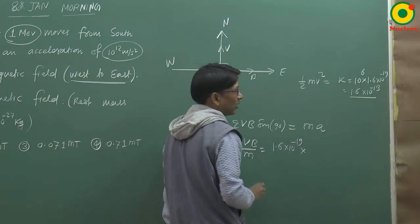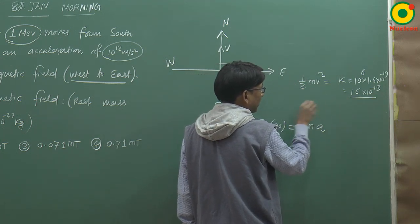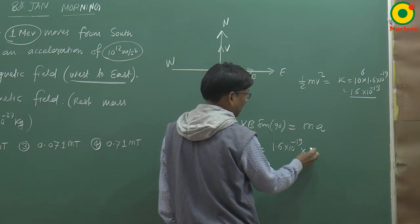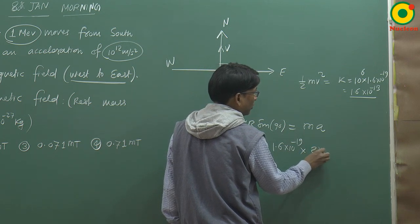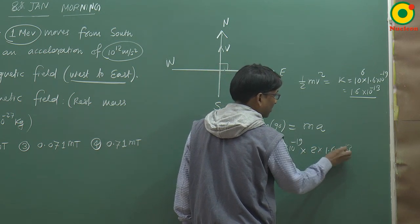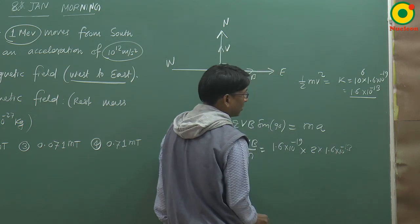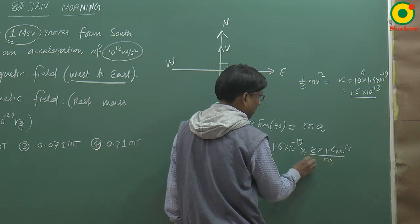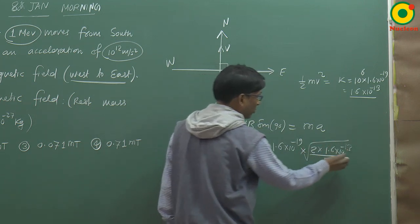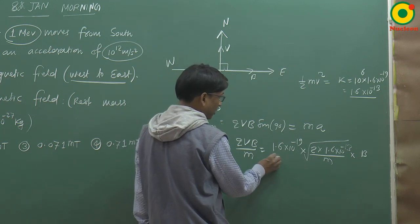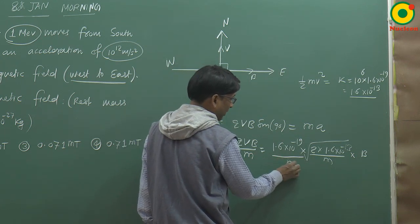Yaha half mv square ho gaya. Toh yahaan se v ka value, wohan hum nikal ki is me rakh sakte hai. Woh aajayega itna: 2 into 1.6 into 10 to the power minus 13 divided by m ka root into magnetic field. Divided by yahaan par mass hai m.